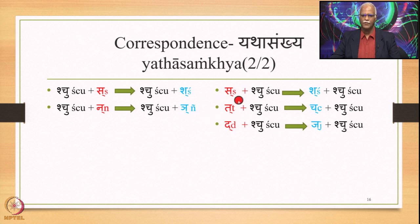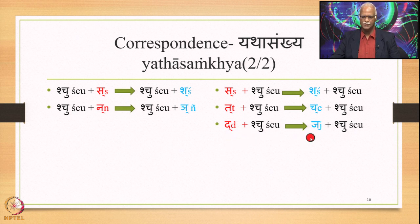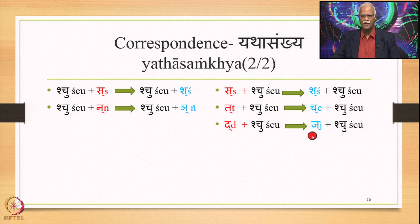In the case of Paranimitta Ekadesha, when we have Shuhu plus Shchuhu, once again Shuhu is substituted by Shuhu which appears in the first position in the set. Similarly, Tha followed by Shuhu — Tha will be substituted by Chuhu which also appears at the initial position of Chavarga. If we have Tha followed by Shuhu, Tha will be substituted by Juhu which is the third consonant in Chavarga. So there is correspondence between the third position and Juhu at the third position, but this correspondence does not exist between the Sthani and the Nimitta, or Adesha and the Nimitta.